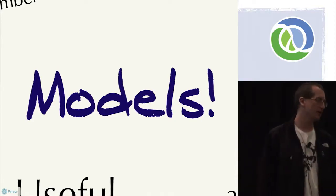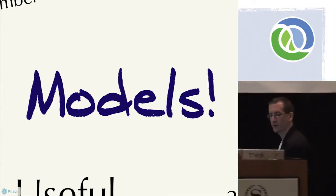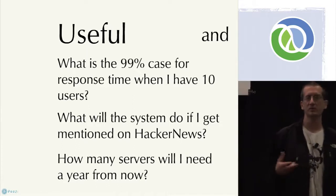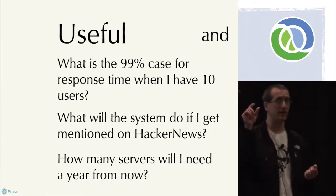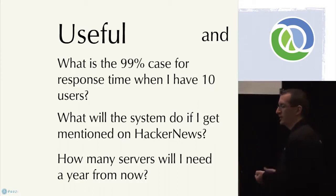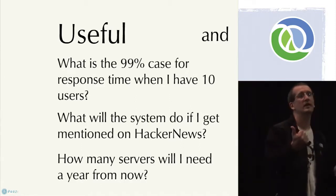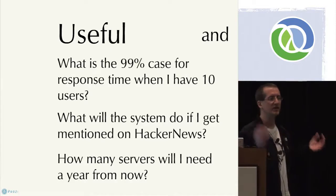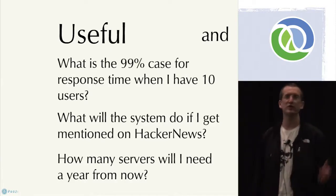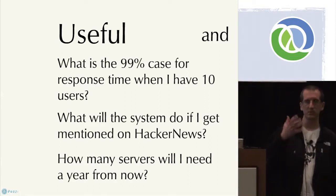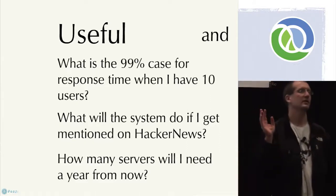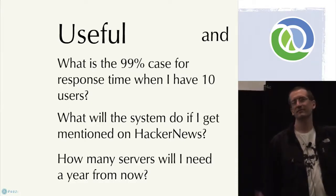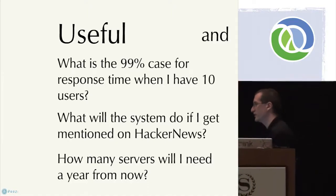What we're really looking for is a more useful model — one that can answer questions. A model that tells me what the system is going to do 99% of the time when I've got 10 users doing this or that — that's useful. I can make decisions about how to build the system with that. What will it do if I get mentioned on Hacker News and suddenly there are 10,000 users? That may be something really useful to know for capacity planning. If your model is just 'the system always returns the home page in three seconds,' that's not really useful.